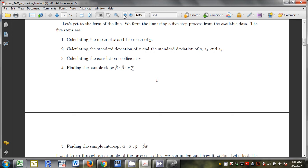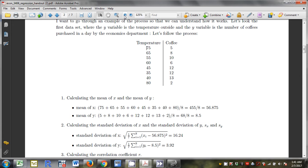I want to go through an example of the process so we can understand how it works. Let's look at the first data set where x is the temperature outside and y is the number of coffees purchased by the economics department. I think that maybe the temperature x impacts the amount of coffee purchased y, but I don't think it works in the other direction.